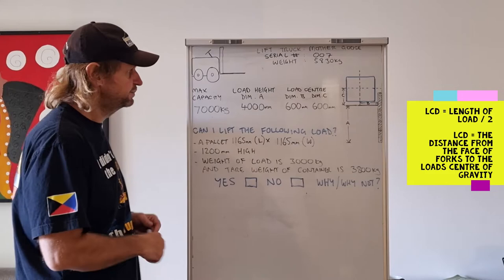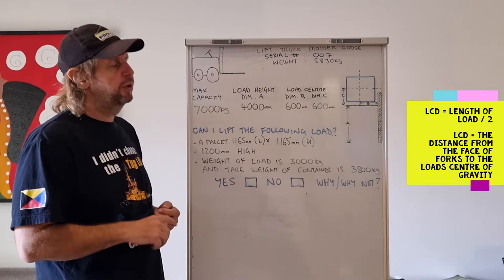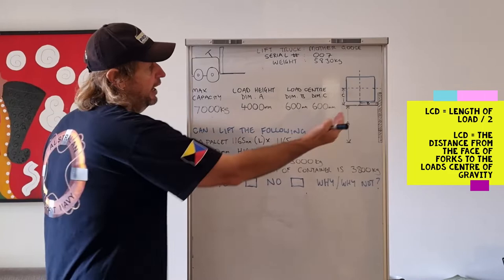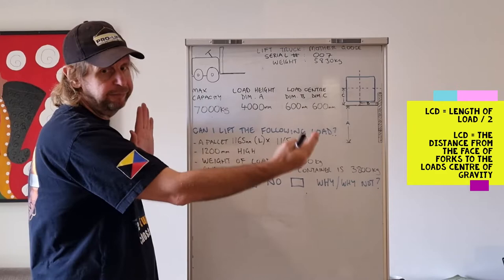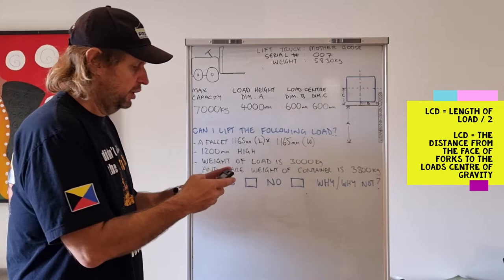Okay, so load center distance, 600 millimeters. So why is the load center distance 600 millimeters? Because generally a pallet in Australia is about 1165 millimeters. And if we have a load center distance of 600 millimeters, the way you work it out is you halve that. So 1165 millimeters, let's get our calculators here, divided by two, equals 582.50 millimeters. So that falls within that load center distance.